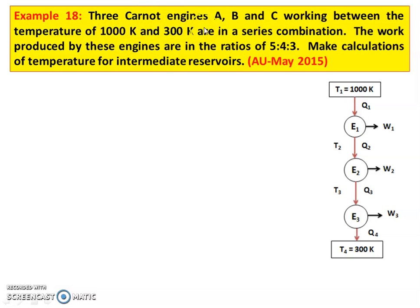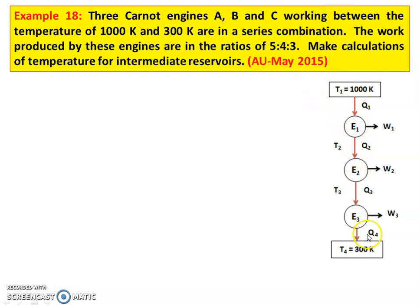Three Carnot engines E1, E2, E3 working between the temperatures 1000 Kelvin and 300 Kelvin are in a series combination. The work produced by these engines are in the ratio of 5 is to 4 is to 3.